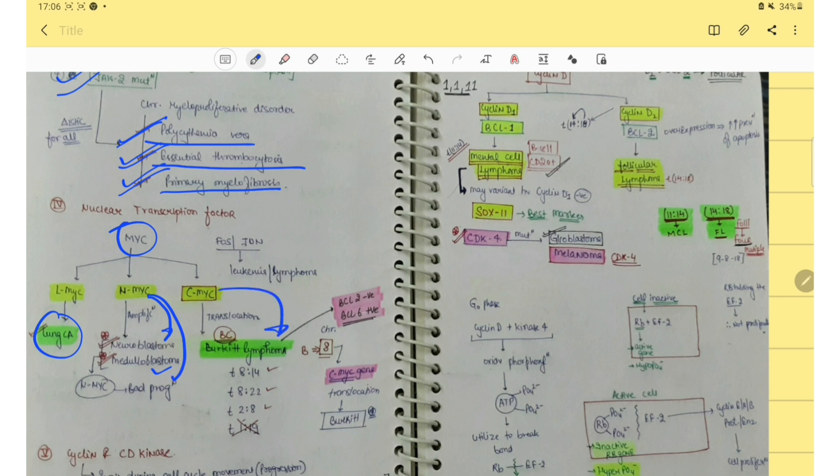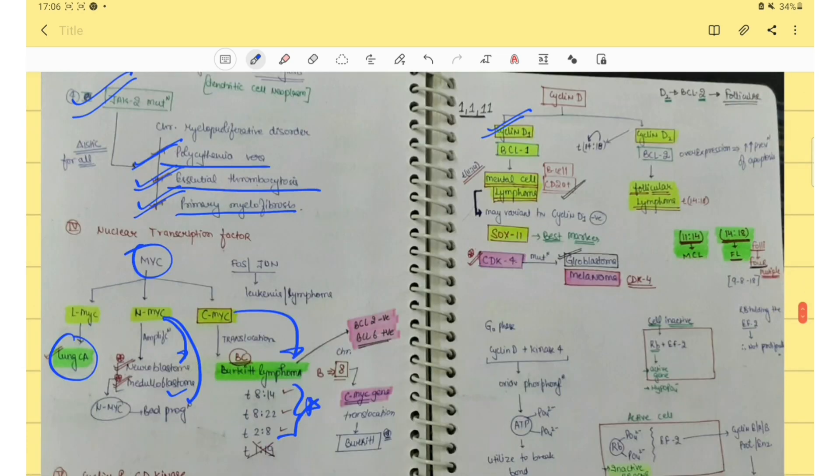Then you should know about these translocations. This is very important. Cyclin D1 is involved in mantle cell lymphoma and Cyclin D2 involves in follicular lymphoma.